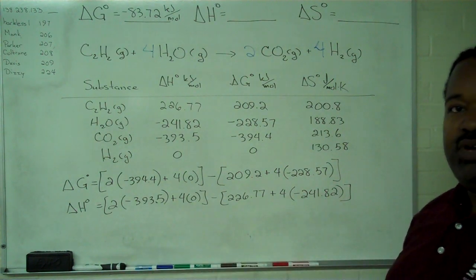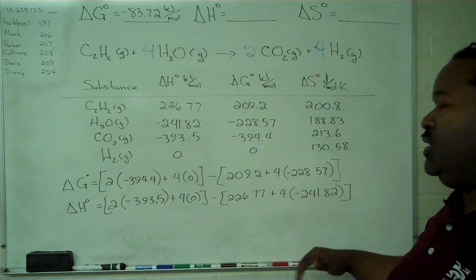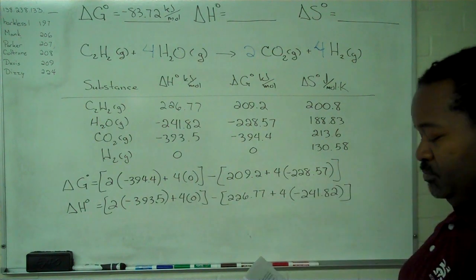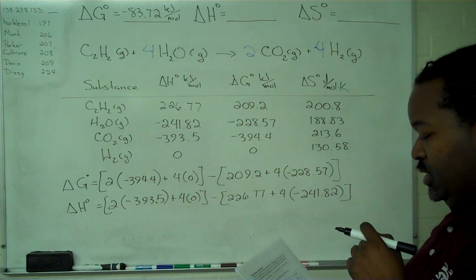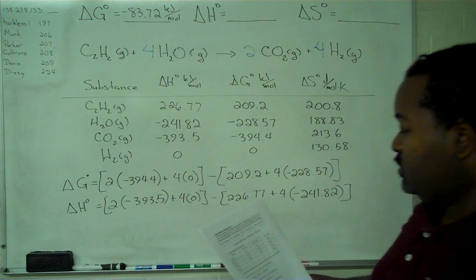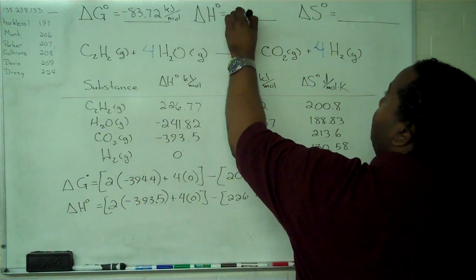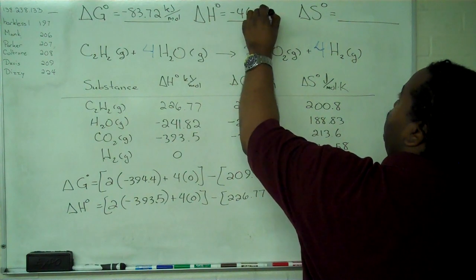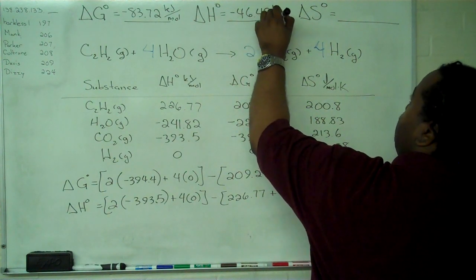So we have stoichiometric sum of products minus reactants. And this should all come out to minus 46.49 kilojoules per mole.